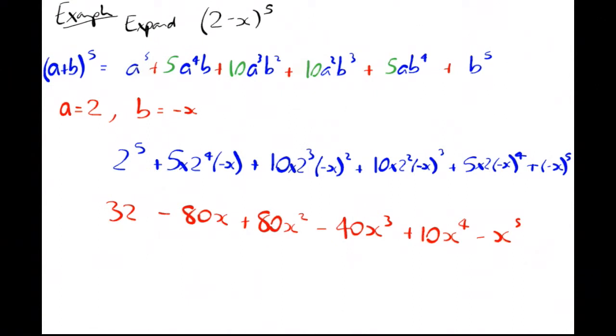If you notice with these, it goes plus minus plus minus plus minus, which is one of the properties that if you've got something minus something to the power, you should always alternate like that.